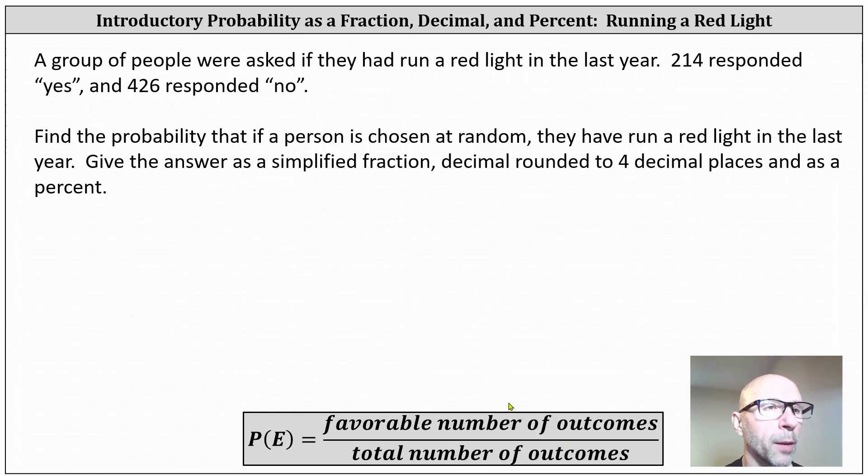In this case, the total number of outcomes will be the total number of respondents, which is 214 plus 426, which equals 640. This is the denominator of the probability.